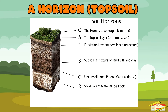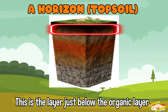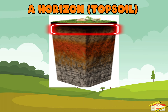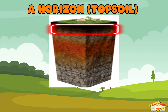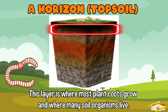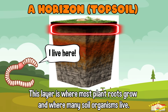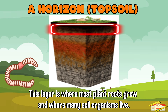A-Horizon, topsoil — this is the layer just below the organic layer. It's also dark because it contains a lot of organic matter mixed with minerals. This layer is where most plant roots grow and where many soil organisms live.